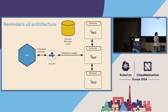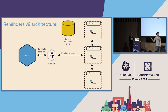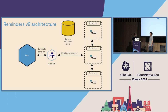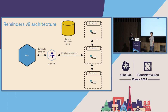Each Dapr sidecar will create a persistent connection to the scheduler instances, which will partition the reminders. They will know exactly which Dapr sidecar called them and which application instance to call back. It's a simple but highly efficient architecture that will make Workflows stable and significantly improve Actor Reminders. If you're using Actor Reminders today and suffering the performance limitations, this is all probably going to go away.